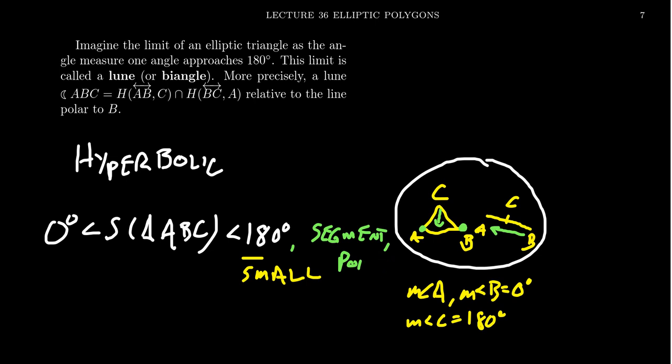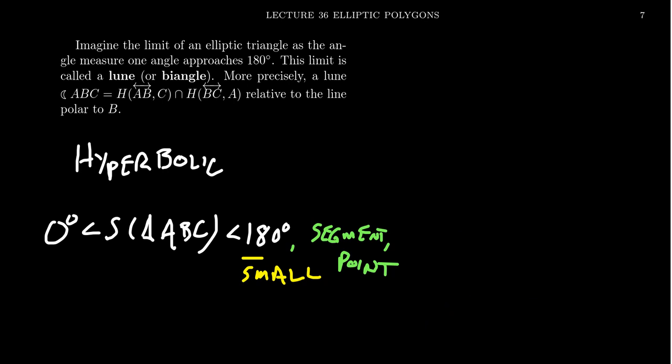So this 180 degree measure can be obtained when your triangle degenerates into a segment or to a point. Is there a way of doing this for the zero bound below? How does a triangle get a measure of zero? Well, a triangle is not going to do that, but the limit of a triangle can.